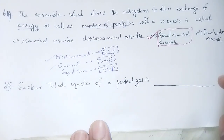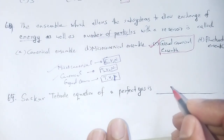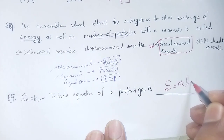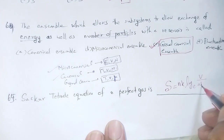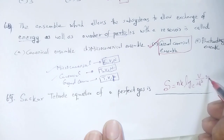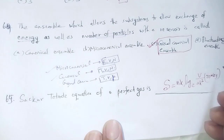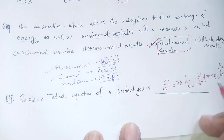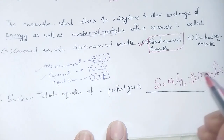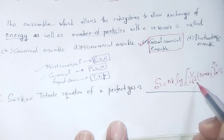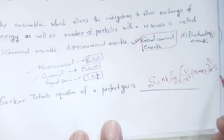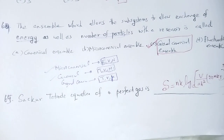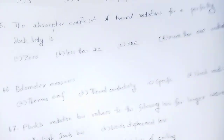Question 63: The Sackur-Tetrode equation for entropy of a perfect gas. You have to remember that entropy S = Nk log [V/N × (2πmkT/h²)^(3/2) × e^(5/2)]. You have to remember that equation. Question number 65 follows.